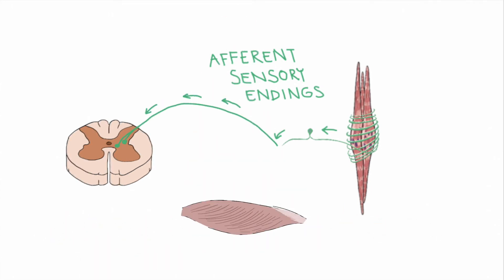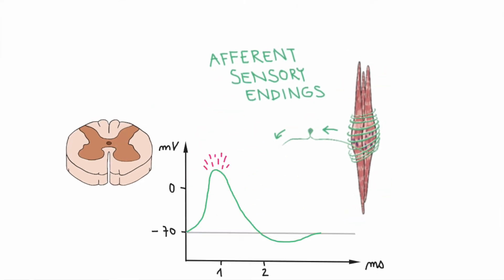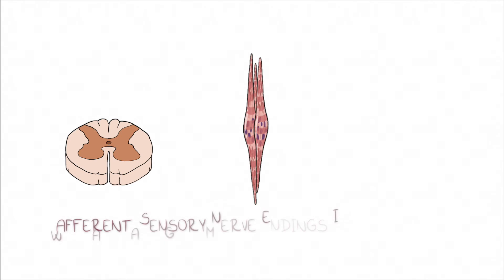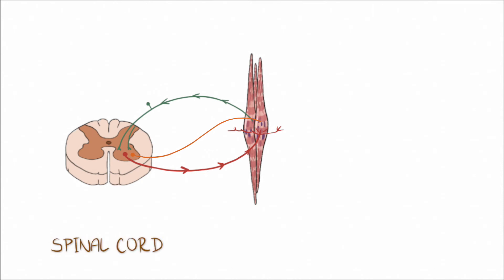As the muscle is stretched, the intrafusal fibers of its muscle spindle are also stretched, causing the efferent nerve fibers to initiate an action potential. Efferent sensory nerve endings interconnect with alpha and gamma motoneurons in the spinal cord.